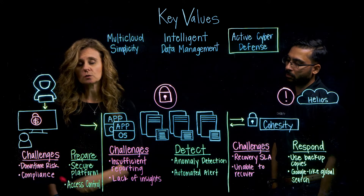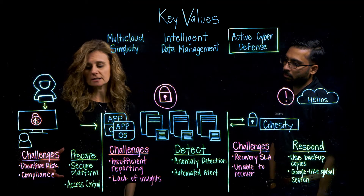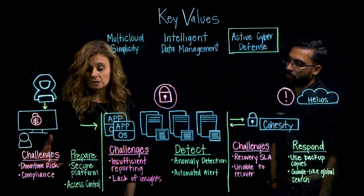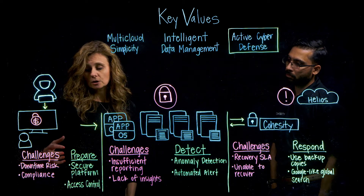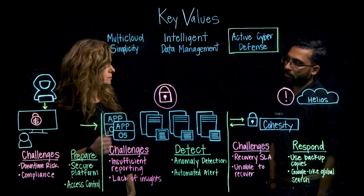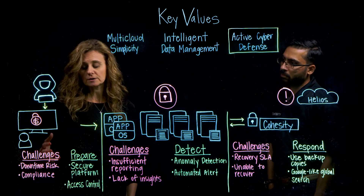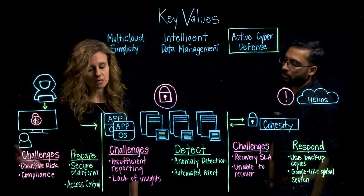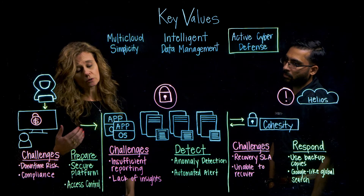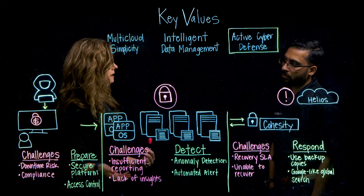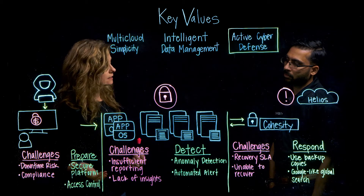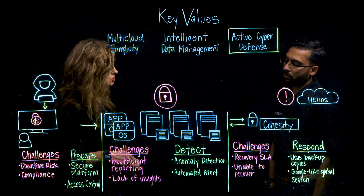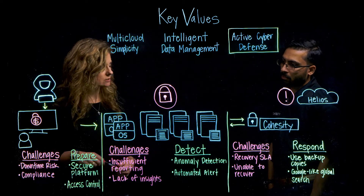First and foremost: downtime risk. Anytime you have file and object downtime, you are at risk of being out of compliance with your data, and that's not a place an organization wants to be. So how does Smart Files help organizations be better prepared for that situation?